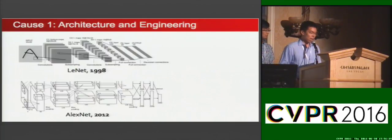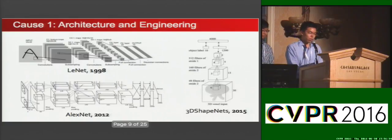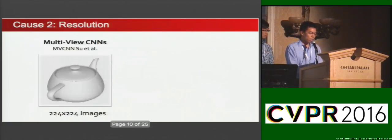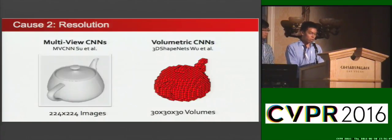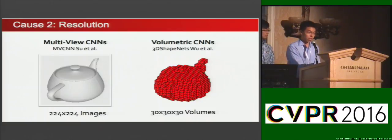One possible cause of the gap is architecture and engineering effort. While ConvNets on 2D images have been researched for more than 20 years, deep learning research on 3D data just started very recently. A second cause may be the difference in input resolution. In multi-view CNNs, input images capture rich details. However, volumetric CNNs take rather coarse inputs, as computation costs for 3D resolution grow cubically, so the typically used resolution is merely 30.